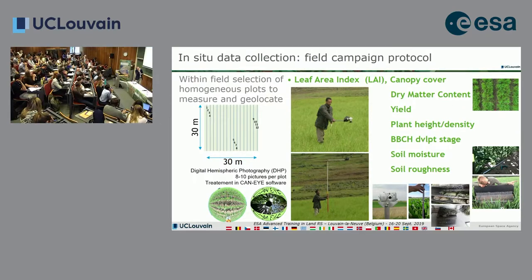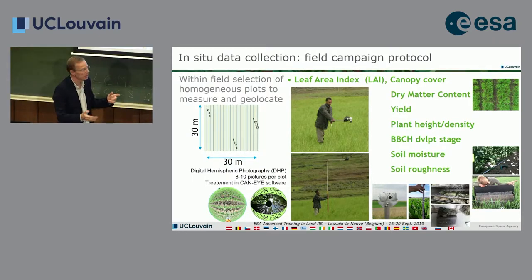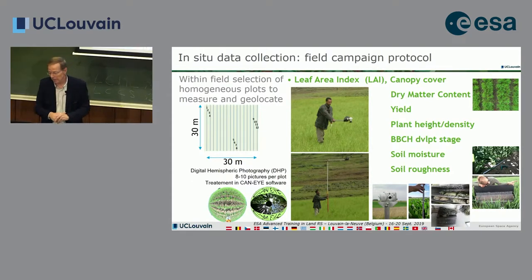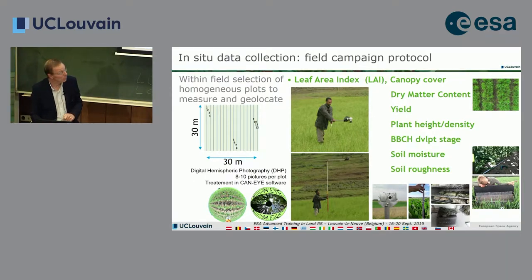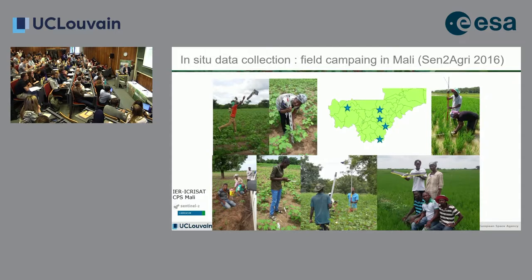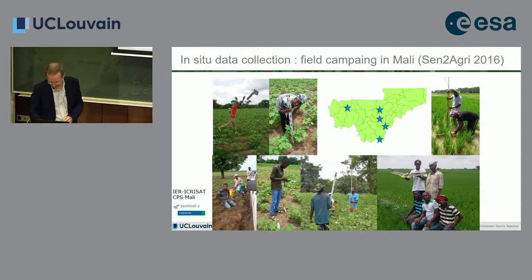Besides leaf area index and yield, canopy cover is also very useful, as is dry matter content—though more involved, requiring cutting, going to the oven, and waiting 24 hours. Development stage and soil moisture and roughness will be demonstrated in the in-situ measurement session this afternoon. This is the team of Suleiman measuring across Mali several variables for Sent2Agri—it takes weeks to do the job.